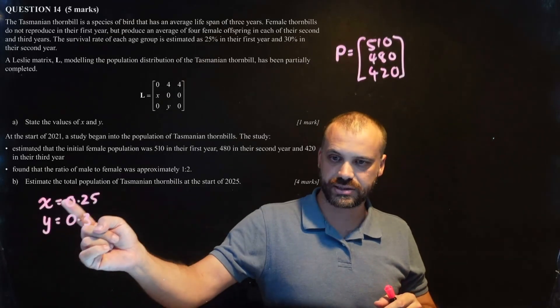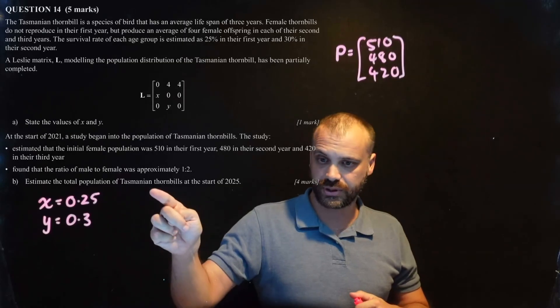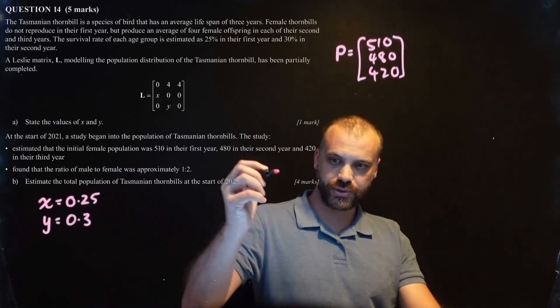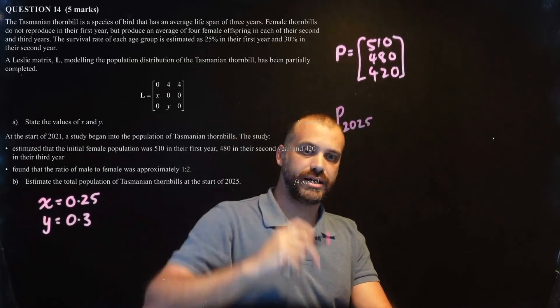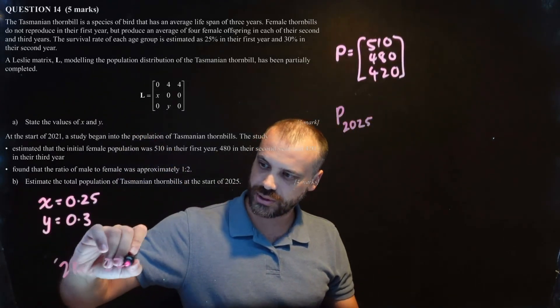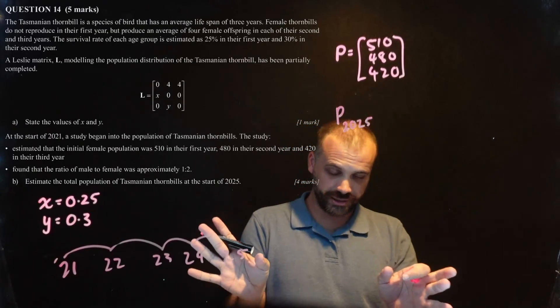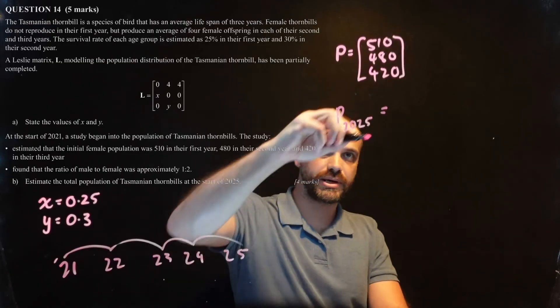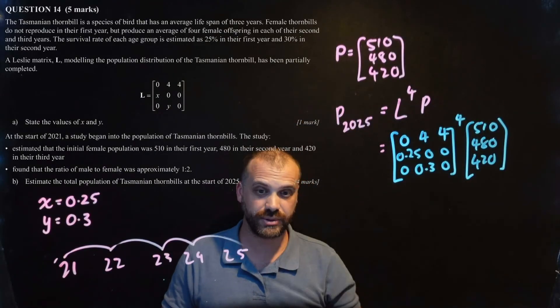Now, of course, it's worth noting that this population is only the female population. When it comes to Leslie matrices, we can only deal with female populations, and then we have to deal with male populations in the end. Here, it says, found that the ratio of male to female was approximately 1 to 2. Okay. So, that must be important information for the end. Because part B says, estimate the total population. So, females and males. So, two stages. We're going to find the female population, and then we're going to use that ratio to then add the males into the population as well. Alright. So, when do we want to know the population? We want to know the population at the start of 2025. Now, we started in 2021. So, let's just write that out. 21, 22, 23, 24, 25. 1, 2, 3, 4. Alright. Pretty clear cut. We're moving forward four years. So, it's going to be L to the 4 times the population. Alright. So, that's it. I think I just typed this into my calculator. I'm good to go.